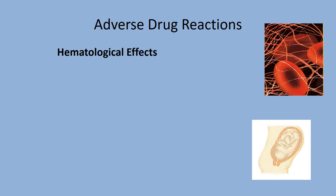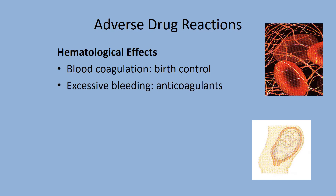Hematological effects: some drugs thin the blood while others make it thicker and stickier. Women on oral contraceptives are recommended not to smoke, as cigarette smoke thickens the blood and increases risk of clots, which can move to the brain causing stroke or to the lung causing embolism. Anticoagulants are designed to thin the blood to prevent heart attacks and strokes. Aspirin and alcohol also thin the blood and may lead to bleeding or clotting problems.